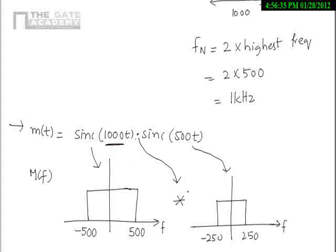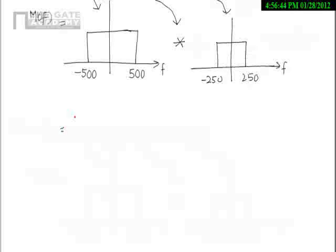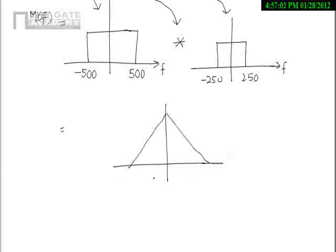Multiplication in time domain is convolution in frequency domain, and sinc 500t has a rectangle as its Fourier transform. When you convolve two rectangles, as seen in signals and systems, the resultant is a triangle. The width of the resultant signal is W1 plus W2, so you just sum them up. The result spans from minus 500 minus 250 to 500 plus 250.